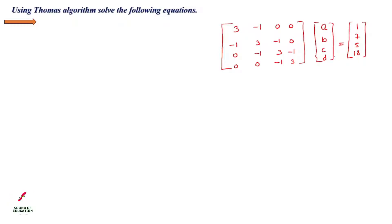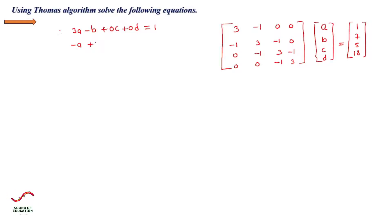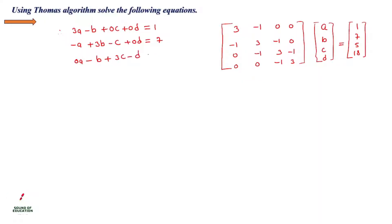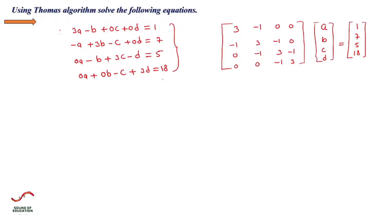We need to convert the matrix into equation form. For example, the first equation becomes: 3A minus B plus 0C plus 0D equals 1. The second equation is: minus A plus 3B minus C plus 0D equals 7. Similarly, we write out all four equations from the matrix.